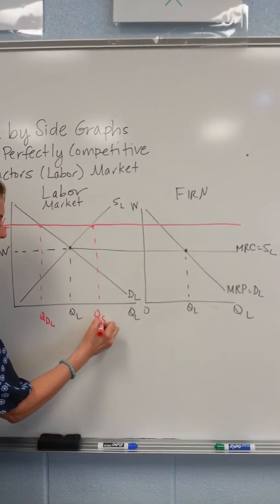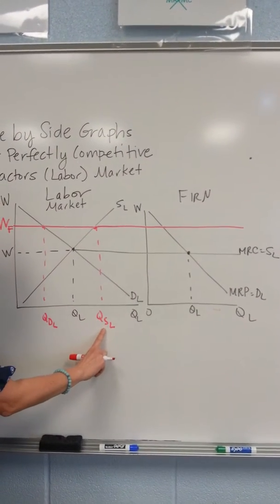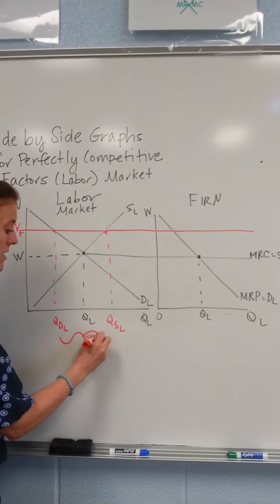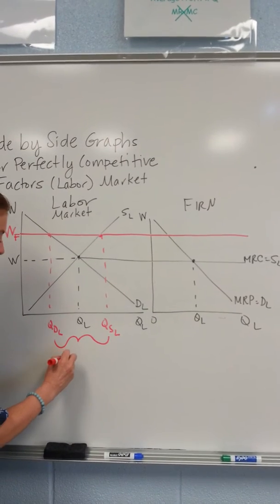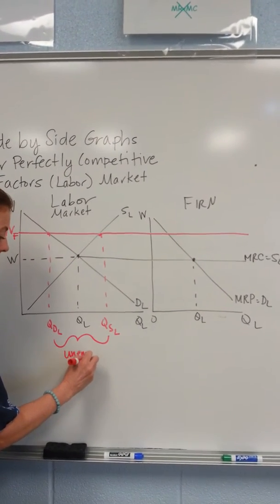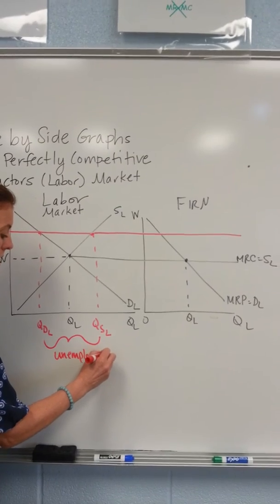This is the quantity supplied of labor, which is the number of people who are seeking jobs. The distance between the quantity demanded and the greater quantity supplied is the number of workers unemployed.